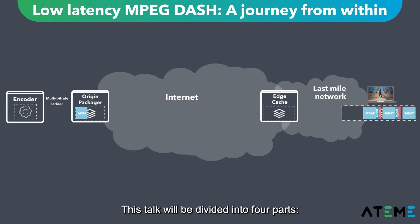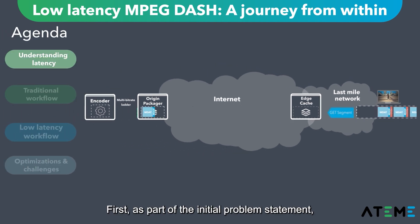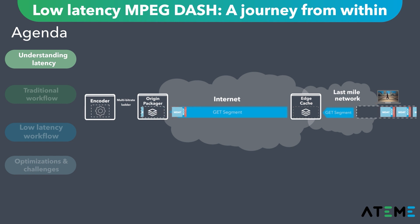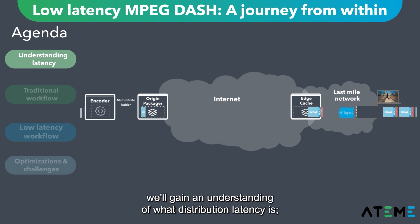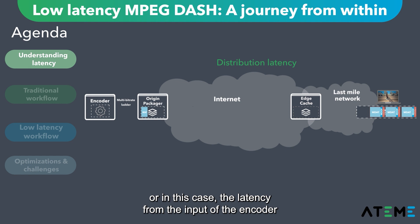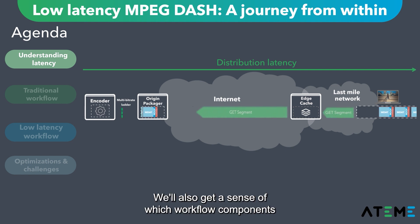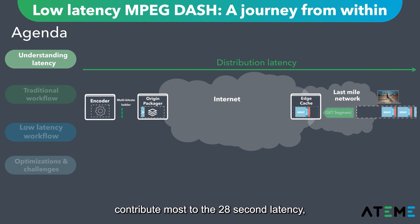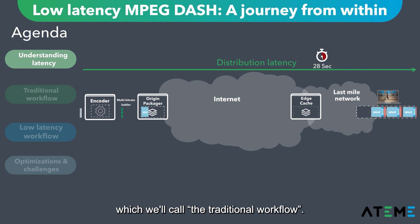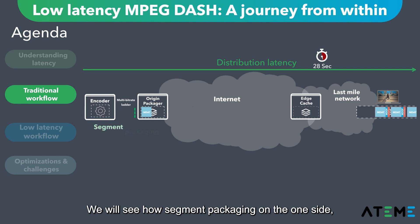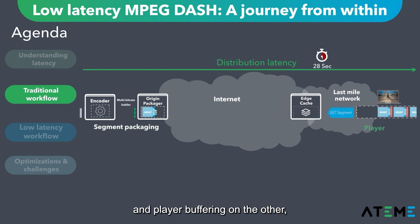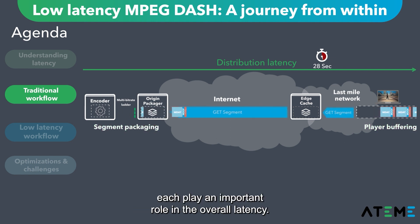This talk will be divided into four parts. First, as part of the initial problem statement, we'll gain an understanding of what distribution latency is — the latency from the input of the encoder to the actual video shown to the viewer. We'll also get a sense of which workflow components contribute most to the 28-second latency, which we'll call the traditional workflow. We will see how segment packaging on one side and player buffering on the other each play an important role in the overall latency.